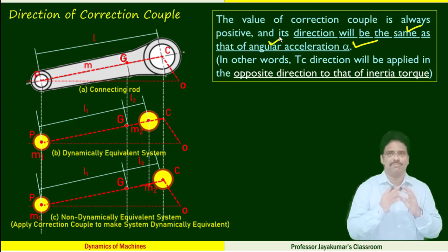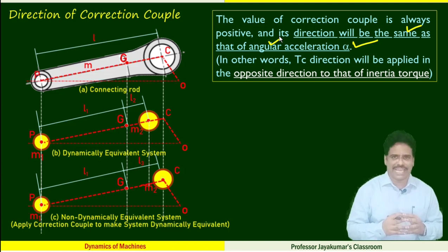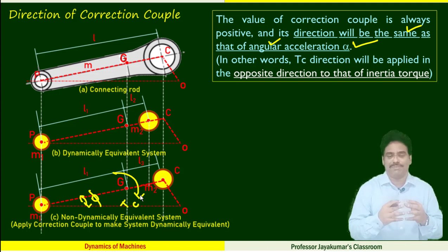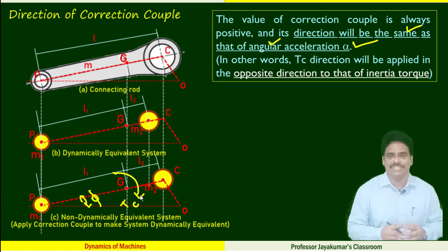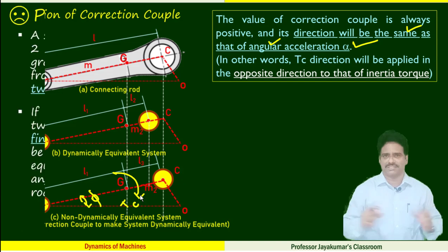The correction couple acts in the same direction as the angular acceleration α. In other words, the correction couple direction is applied in the opposite direction to that of the inertia torque. So we have determined both the magnitude and the direction of the correction couple.